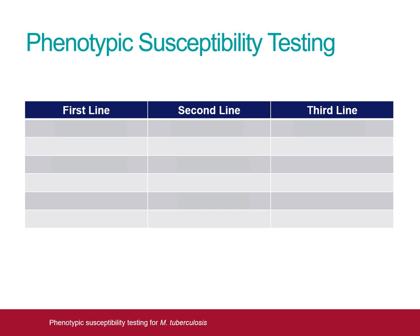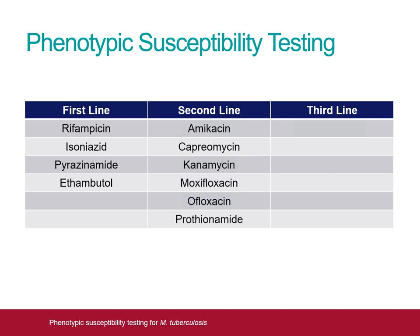Historically, the NMRS has divided TB drugs into three categories for the purposes of drug susceptibility testing. The first line agents comprise rifampicin, isoniazid, pyrazinamide and ethambutol. These form the backbone of treatment for the vast majority of TB cases worldwide and in the UK, and until recently all TB isolates received by the NMRS were tested against these agents. The second line agents comprise the injectable agents, fluoroquinolones and prothionamide. Testing of these agents has typically been reserved for cases of drug resistant TB or when patients have failed to tolerate standard therapy. Finally, testing of the third line agents linezolid and PAS has been performed only when resistance to multiple first and second line agents has been detected.